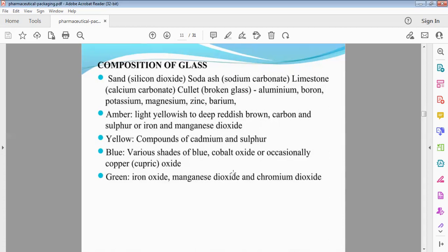Amber glass - light yellowish to deep reddish brown, used for syrups. Contains carbon, sulfur, iron, manganese dioxide. Yellow glass - cadmium. Blue - shades of blue from cobalt oxide, occasionally copper oxide. Green - iron oxide, manganese dioxide, chromium dioxide.